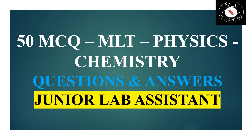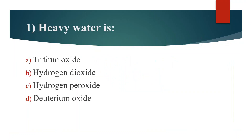First question. Heavy water is. Option A: Tritium Oxide. Option B: Hydrogen Dioxide. Option C: Hydrogen Peroxide. Option D: Deuterium Oxide. Answer is Option D: Deuterium Oxide.